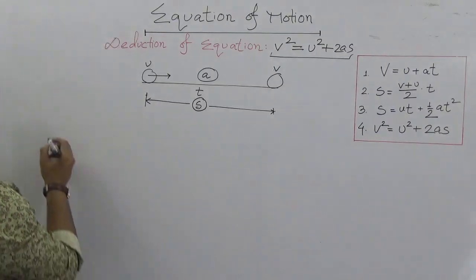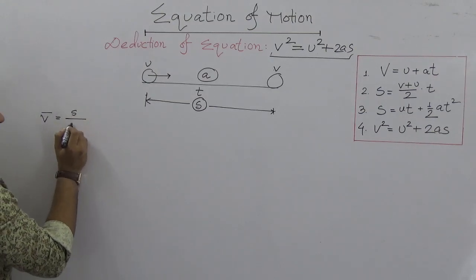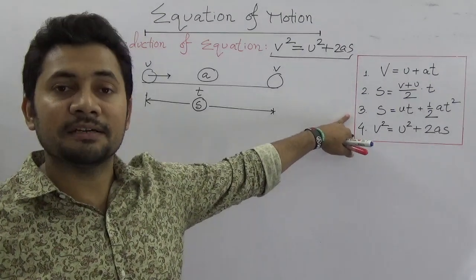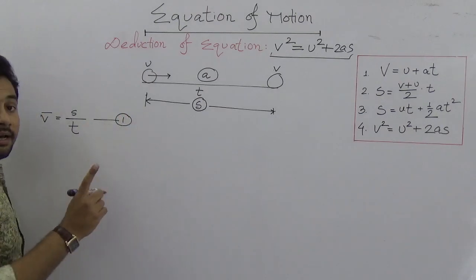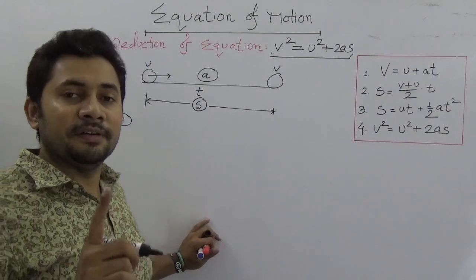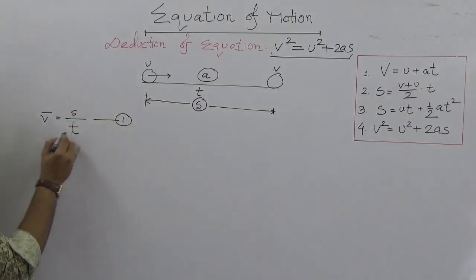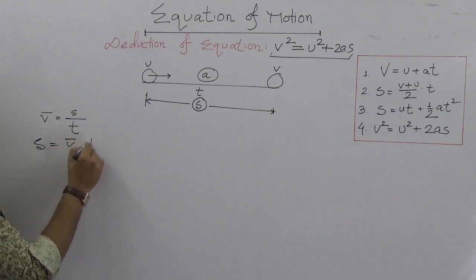The average velocity is actually the displacement over time. Like before, I did s = u·t + ½at². This is equation number one. You also know the definition of average velocity is mathematically s = v̄·t.